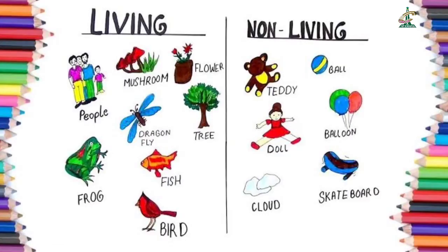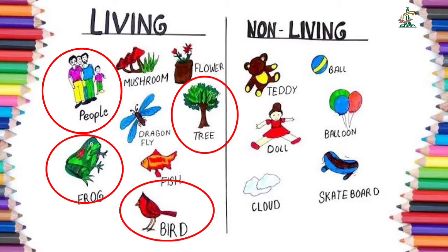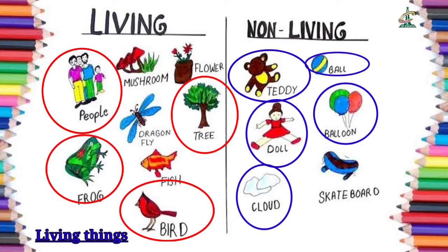Students, we are surrounded by living and non-living things. For example, human beings, trees (plants), and animals are living things. What are non-living things? Teddy bear, ball, doll, balloon, clouds — these are non-living things.